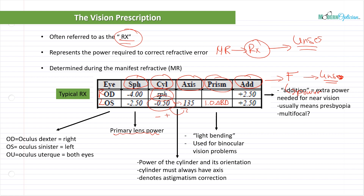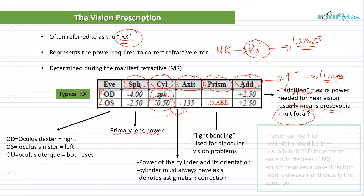Last but not least, we have ADD — the addition — meaning the extra power required for near vision. This usually means presbyopia, meaning a person requires different powers at different focal lengths. Whenever you see an ADD power, the first thing that should come to mind is whether you should be using a multifocal. We can actually calculate a number of different things using the whole prescription including the ADD power — from distance glasses to near glasses to computer glasses.